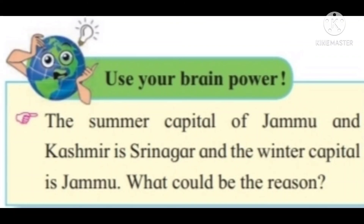Use your brain power: The summer capital of Jammu and Kashmir is Srinagar, while the winter capital is Jammu. What could be the reasons? In Jammu and Kashmir, every year there is a shift of the secretariat and all other government offices from Srinagar to Jammu and vice versa. From May to October, all governmental offices are housed in Srinagar, which is the summer capital. From November to April, the offices are housed in Jammu, the winter capital. The Jammu and Kashmir High Court also moves between the two cities accordingly. Srinagar is bliss in summer, making it both a pragmatic and climatic decision.